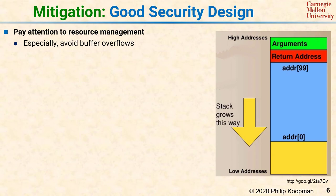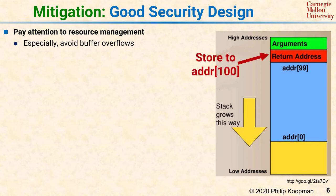To understand buffer overflows, consider a procedure that declares a 100-element array (elements 0 through 99) used to store input from a user or network message. If the attacker sends a message with 101 elements instead of 100, the 101st element will overwrite the return address on the stack with a value of the attacker's choosing. When the subroutine executes its return instruction, it will jump to wherever the attacker wants — perhaps a routine that grants super-user privilege.